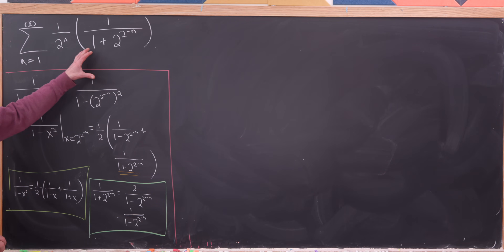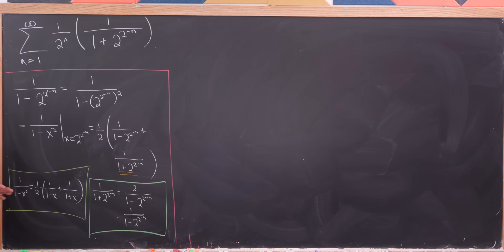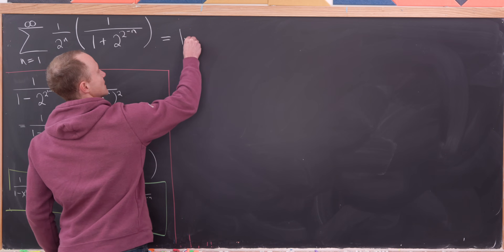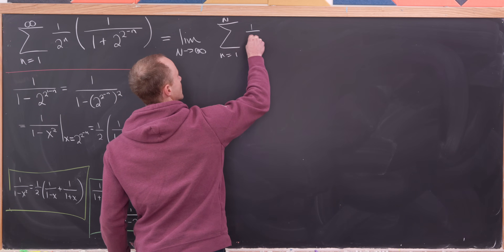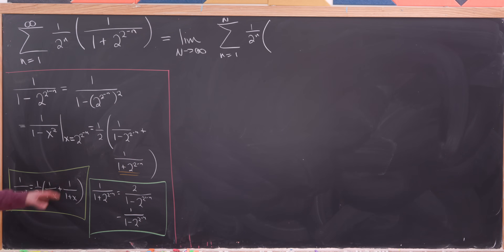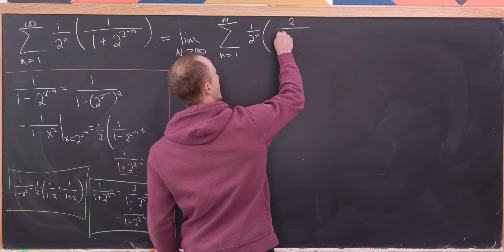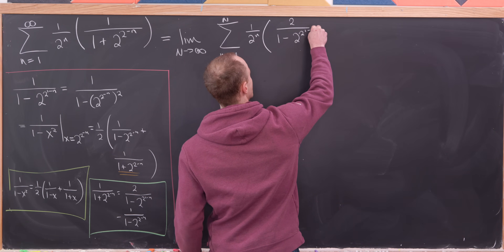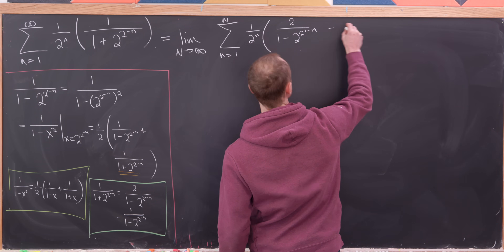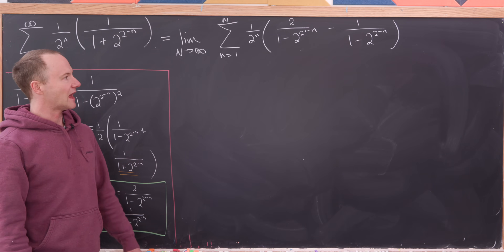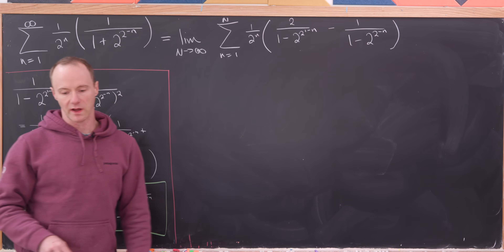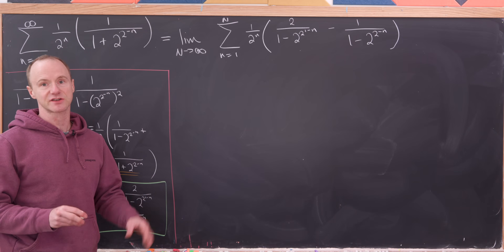Now we replace the term inside our sum with this decomposition. Recall that a series converges if and only if its sequence of partial sums converges, so let's look at the partial sums. This is the limit as capital N goes to infinity of the sum as little n goes from 1 to capital N of 1 over 2 to the n times 2 over 1 minus 2 to the 2 to the 1 minus n, minus 1 over 1 minus 2 to the 2 to the minus n. Notice these exponents are off by 1, which motivates a possible telescoping.